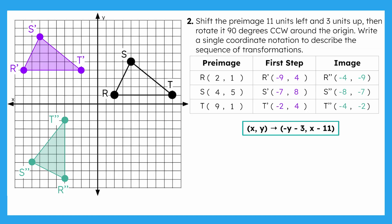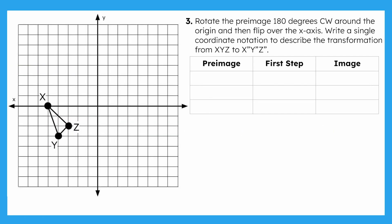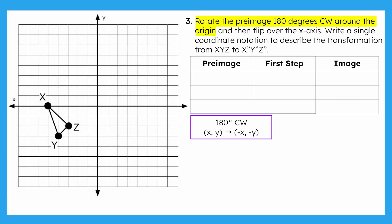Let's look at another example. In this sequence, we're rotating the pre-image 180 degrees clockwise around the origin, and then flipping over the x-axis. The first transformation is the 180-degree rotation, and here is its coordinate notation. Take a moment to fill out the first two columns and plot X, Y, Z prime on the coordinate plane. Pause the video now and come back once you're ready.